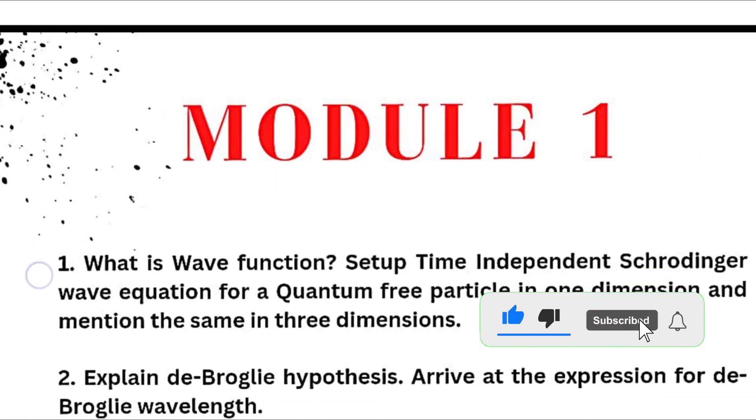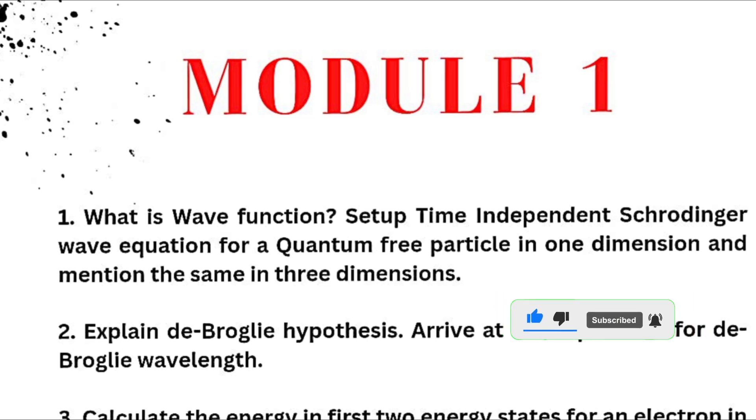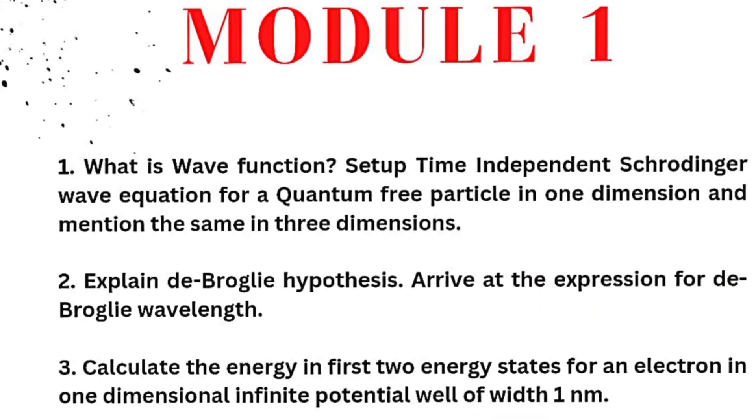So first of all let us discuss here Module 1. From module first you have what is a wave function, set up time independent Schrodinger wave equation for a quantum free particle in one dimension and mention the same in three dimensions. This is a super important question. Most of the times VTU is asking this question with respect of the scheme. From 2018 scheme this question is repetitive. You should not leave it.